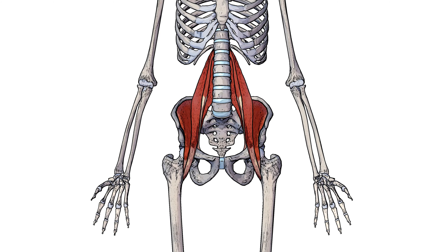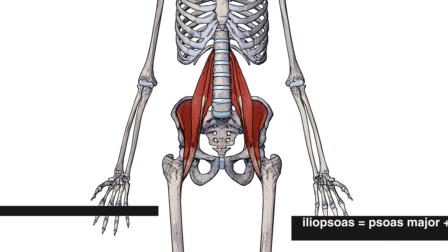Another thing to note about the iliopsoas muscle group is that the psoas minor is connecting onto the hip itself — onto the iliopectineal eminence and pectineal line — whereas the psoas major and the iliacus are both crossing over the hip joint. This is perhaps why some sources don't include the psoas minor as part of the iliopsoas muscle group, but the overwhelming majority of sources include it, so for this video I'm going to include it as well.